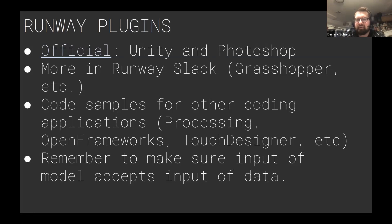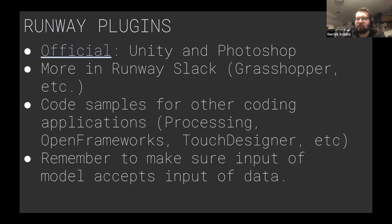A couple of months ago someone released a Grasshopper Rhino plugin, and just this week someone released a vvvv plugin. In general, if you're using other tools, you'll probably find a plugin where you can send images from your application to Runway, get things back, and utilize them however you want. There are also code samples on the Slack page for coders using Processing, Open Frameworks, or Touch Designer — there are plugins or at least code samples for those as well. Next week we're going to look at how to do this using p5, which is a similar process but in JavaScript, so it's a little easier to set up.